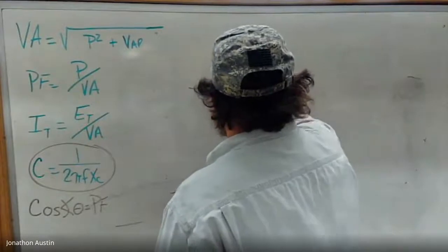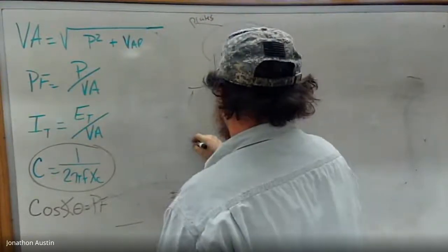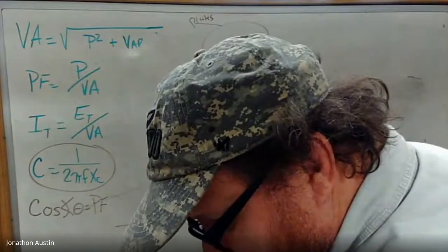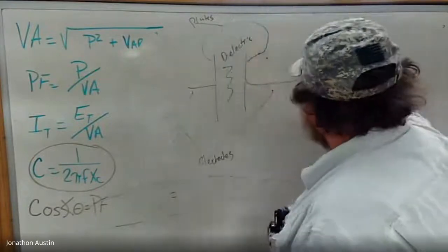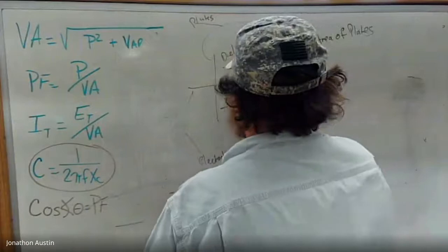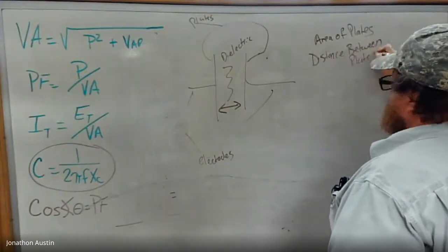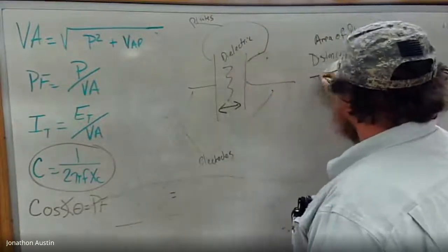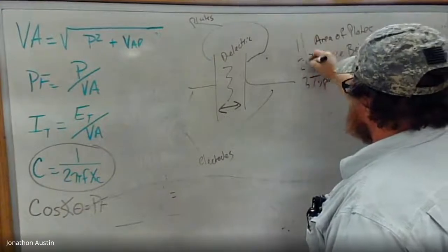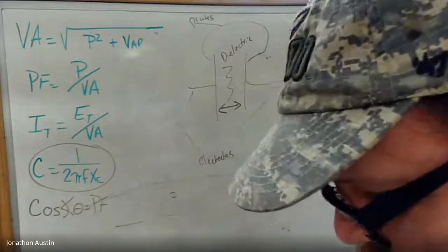All right. So you have a dielectric, and you have plates, and you have your electrodes. So three factors that determine the amount of capacitance a capacitor will have is the area of the plates, how big the plates are, distance between the plates, and the type of dielectric. We'll get to parallels in the next lecture.